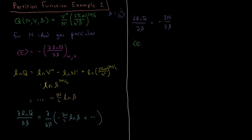The expectation value for the energy is the negative of that derivative: minus times minus gives us plus 3N over 2β. Reminding ourselves that β = 1/(k_B T), so 1/β is just k_B T, this quantity equals 3/2 · N · k_B · T. The energy is directly proportional to temperature and to the number of particles, with a numerical factor of 3/2 times the Boltzmann constant.